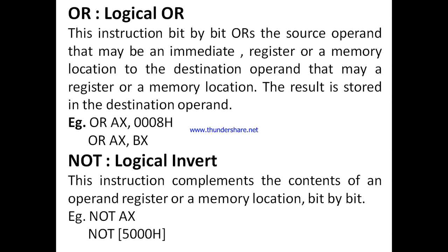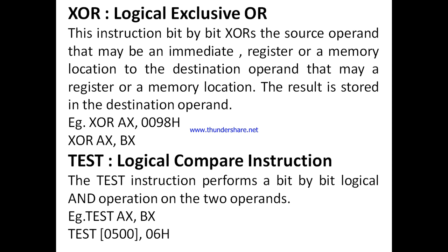For example: NOT AX. If the AX register has values like 1, 0, 1, 0, the NOT operation performs complement on those values — where a 1 becomes 0 and a 0 becomes 1. This is how the logical NOT operation works.